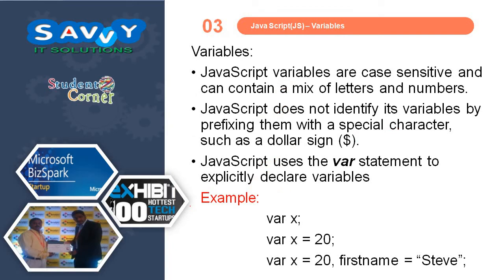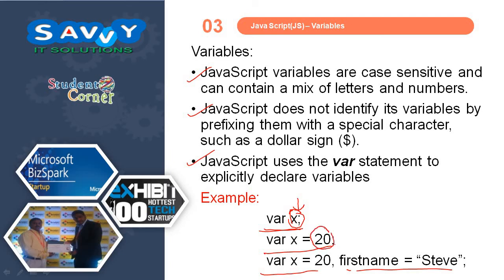The next part is very important: what is a variable and how we create variables in JavaScript. JavaScript variables are case sensitive and can contain a mix of letters and numbers. JavaScript uses the var statement to explicitly declare variables, for example: var x; var x = 20; var x = 20, firstName = 'Steve'. Here, var x alone doesn't define a data type, but var x = 20 means x is of integer type.